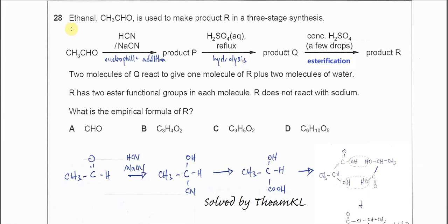This question starts with ethanal to form product R. It goes through a few steps. The first step is nucleophilic addition because it's given HCN and NaCN.